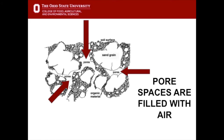This is another way of looking at it. The sand grain is very large and there are air spaces, or pores, between the sand particles. Around the sand particles there is organic material, silt, and clay — finer particles that pack around them and hold on to the moisture.